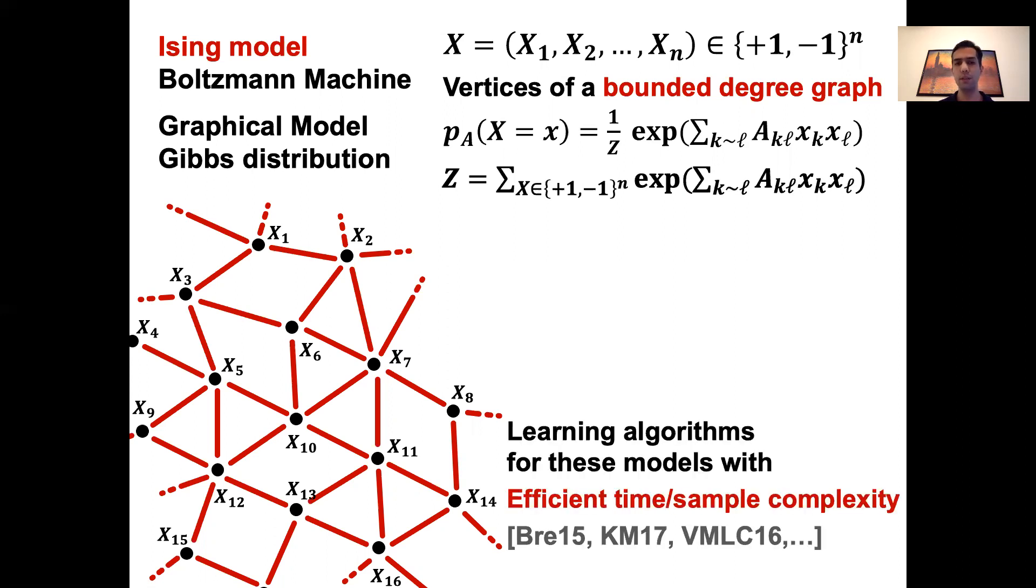So in machine learning or learning theory in general, there is a remarkable line of research that has resulted in algorithms for learning such distributions with efficient time and sample complexity. These Gibbs distributions have a special property that is crucially used in these algorithms to get efficient complexity. This property has to do with the way the variables are dependent on each other.